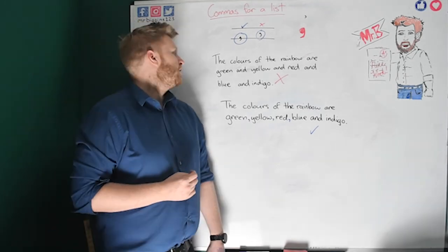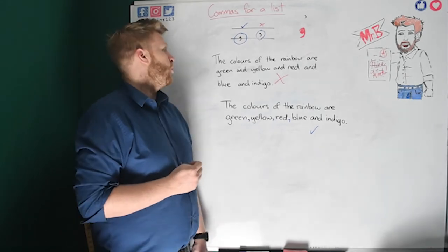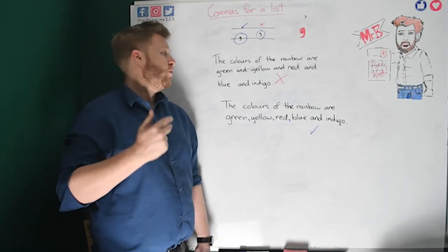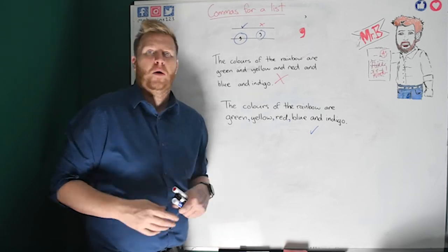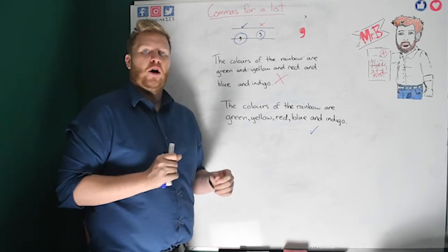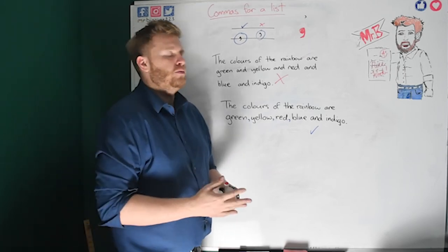You wouldn't go, oh, they are green and yellow and red and blue and indigo. You'd just go green, blue, yellow, red, indigo. And that's what a comma lets us do. Because if we didn't put that comma in, we'd get a little bit confusing. So, look at here.